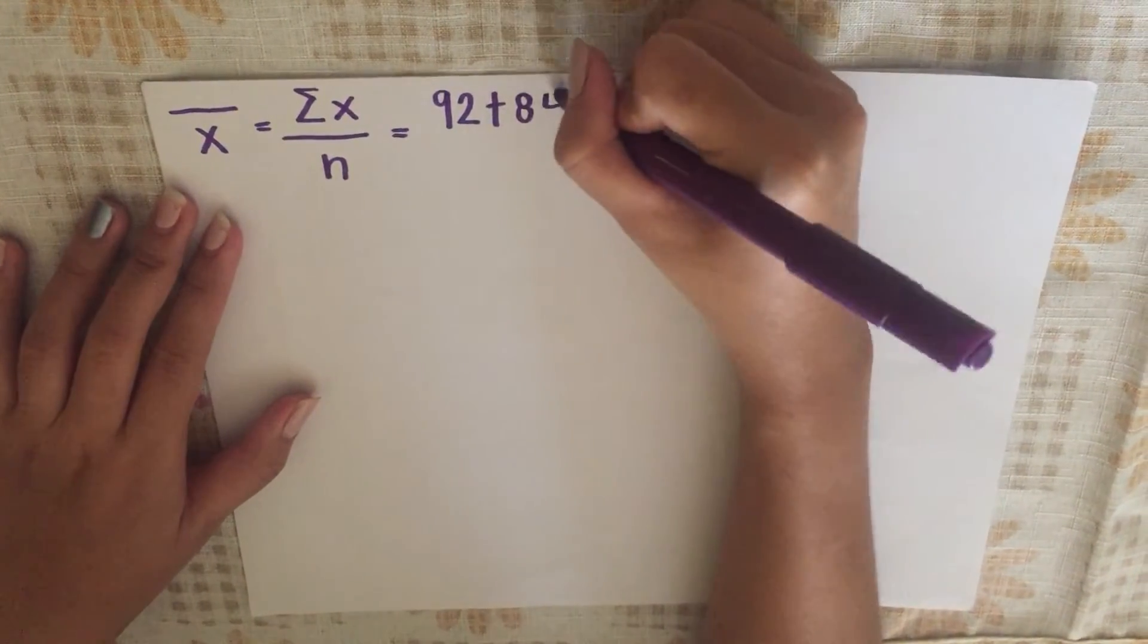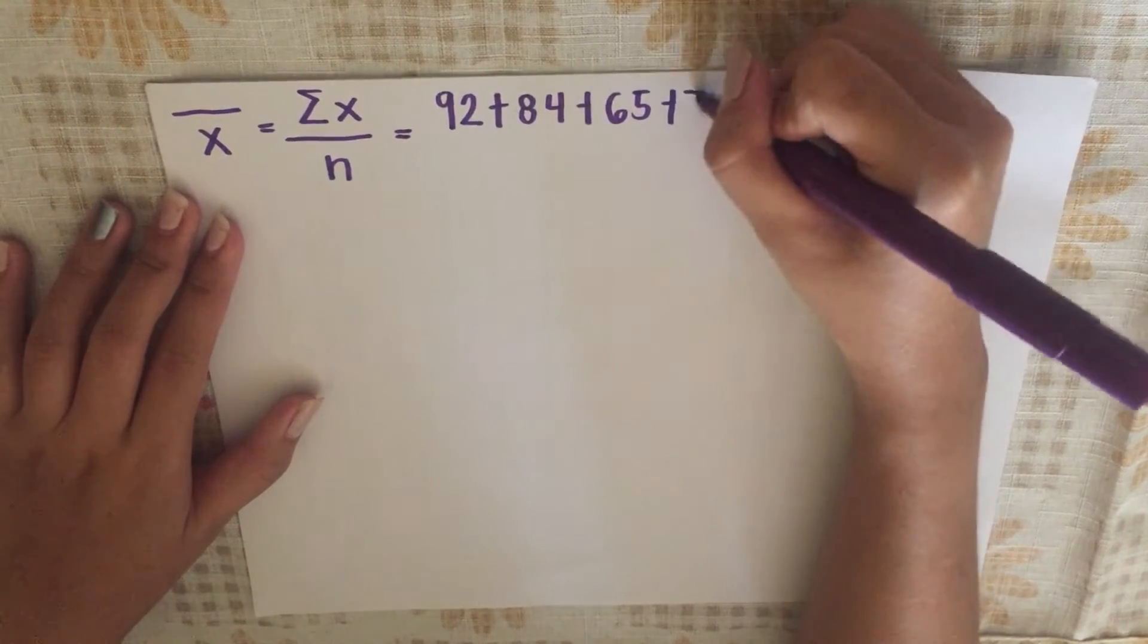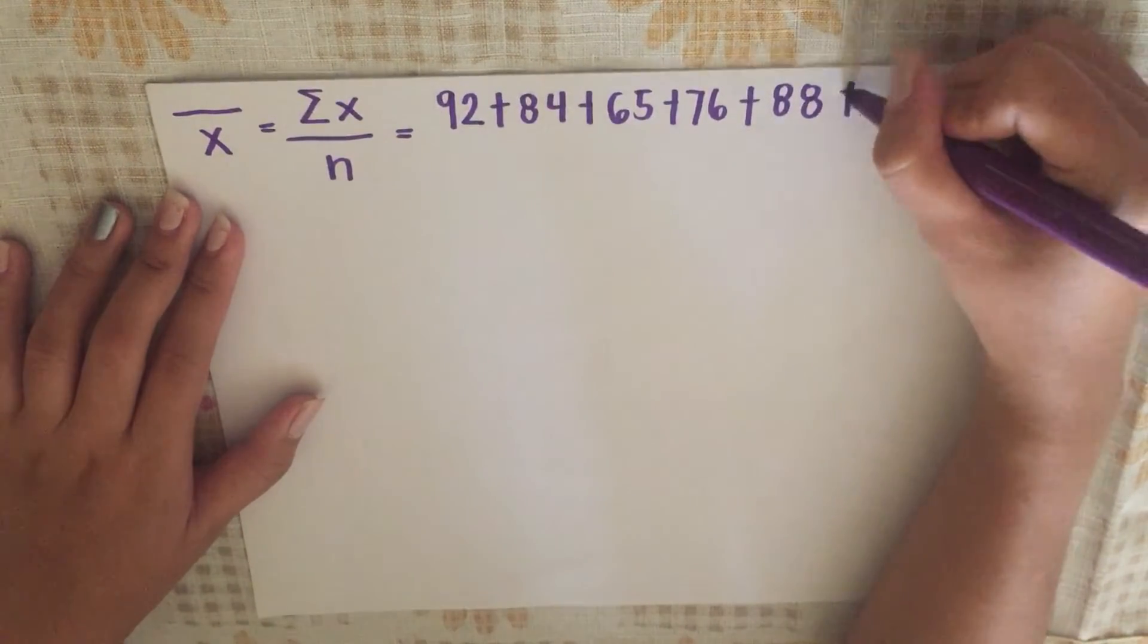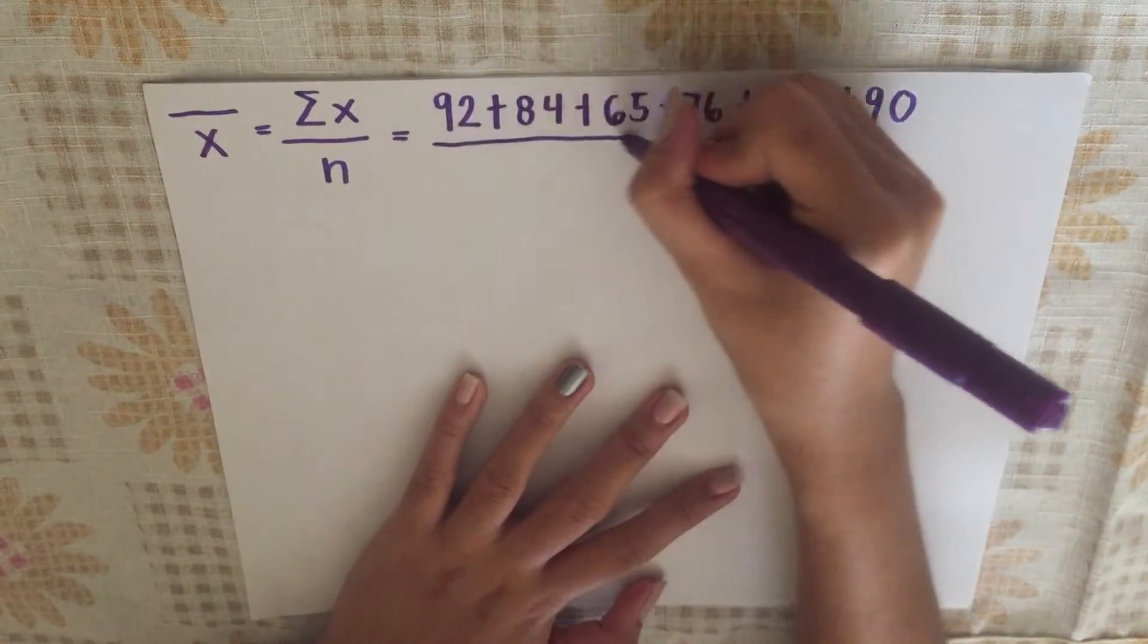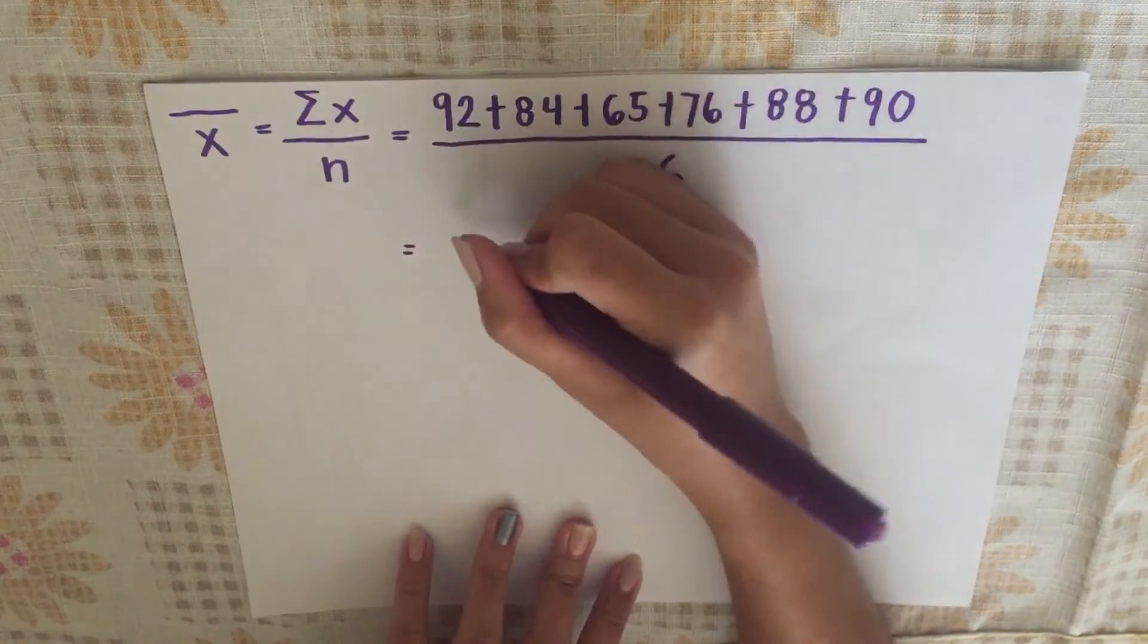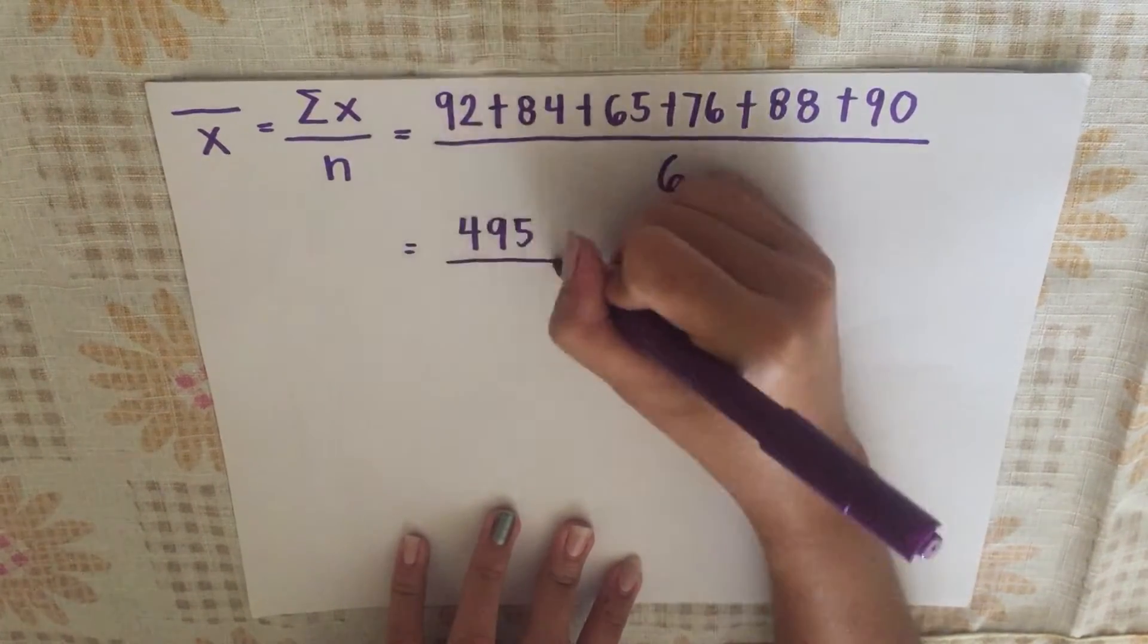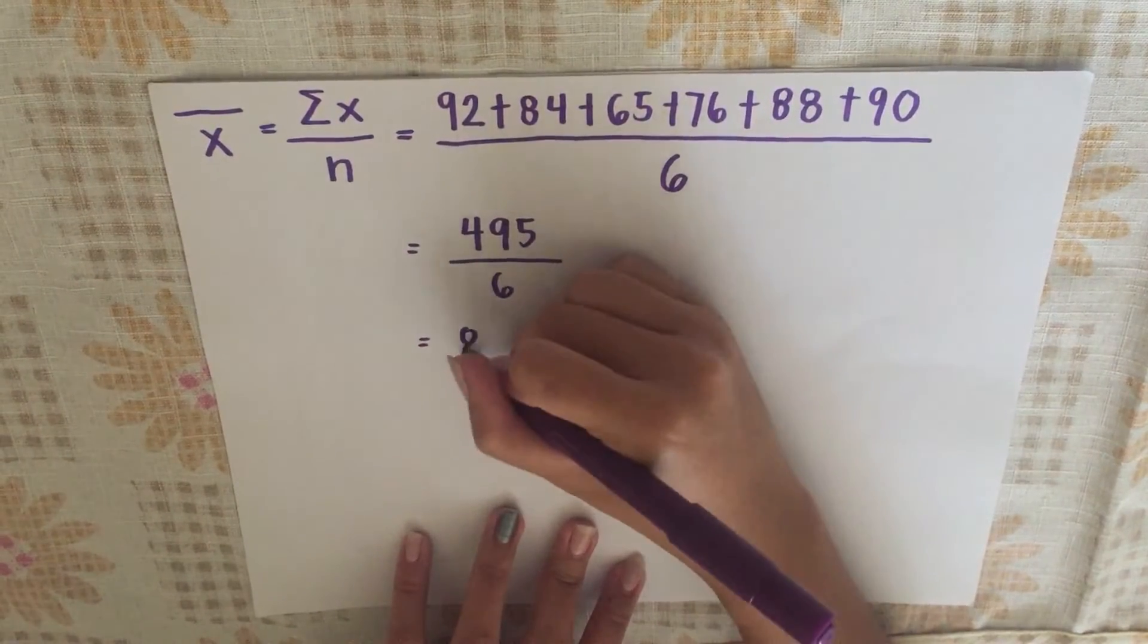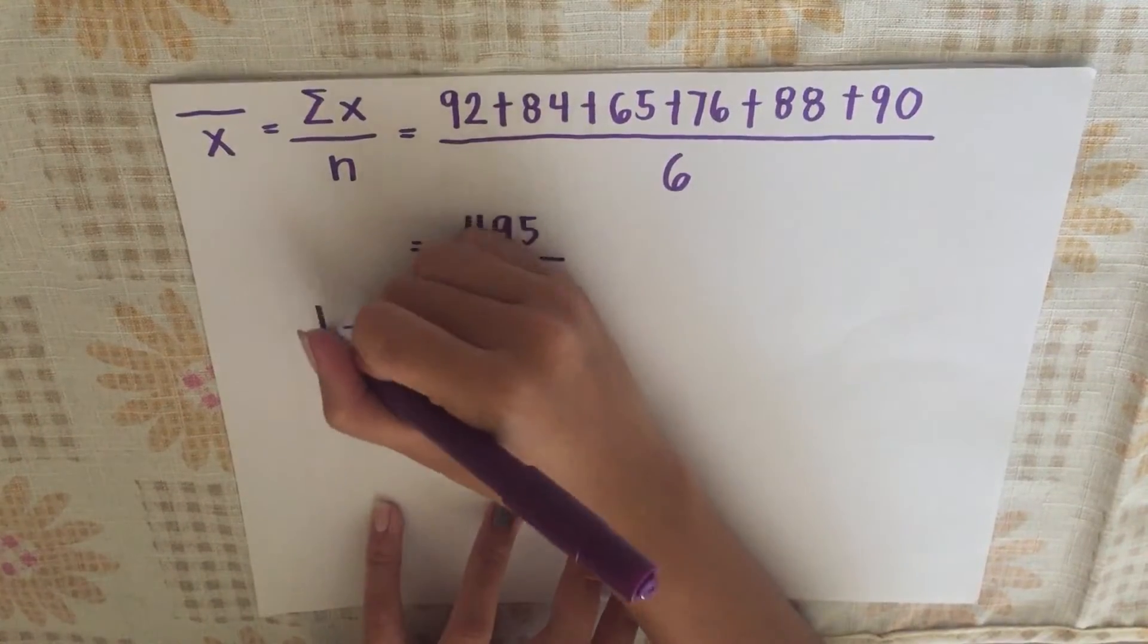We are going to add 92 plus 84 plus 65 plus 76 plus 88 plus 90, and divide it by 6. We will get 495 over 6, and the answer is 82.5. 82.5 is our mean.